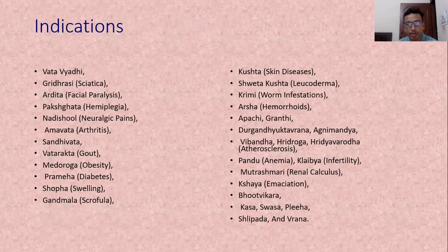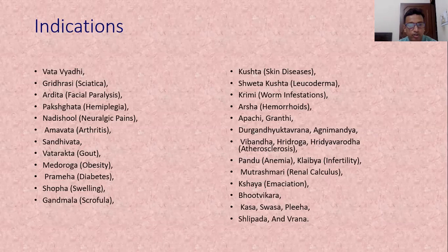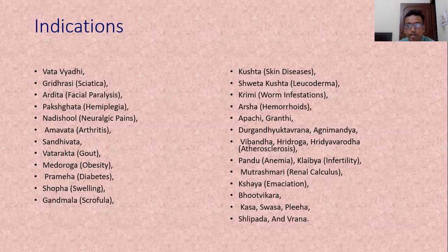Gugul has many indications described in Ayurvedic classics. It is mainly used in different types of Vatavyadhi and joint disorders to reduce pain. Specific indications include Vatavyadhi, Gridhrasi or Sciatica, Ardita Vata or Facial Paralysis, Paksha Ghata or Hemiplegia, Nadi Shula or Neurological Pain, Arthritis, Sandhivata, Vatarakta or Gout, Medaroga or Obesity, Prameha or Diabetes, Shola or Swelling, Granthamala or Scrofula, Kushtha or Skin Diseases, Shvetakushtha or Leukoderma, Worm Infestations, Hemorrhoids, Granthi, Agnimandya, Hridroga, Pandu, Gulma, Renal Calculus, Kshaya, Bhutabadhika, Kasa, Shwasa, Shlipadha, and Vrana.